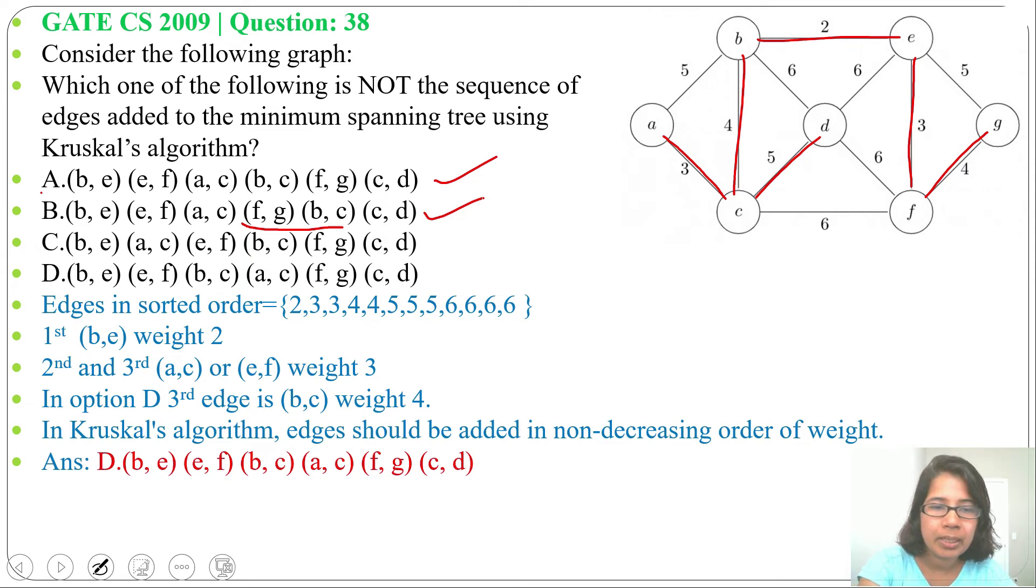Next BE, AC, EF. So weight 3, these AC and EF are altered. We can write in any sequence. This is also a minimum spanning tree. So you can run one option and check whether it is a minimum spanning tree or not.